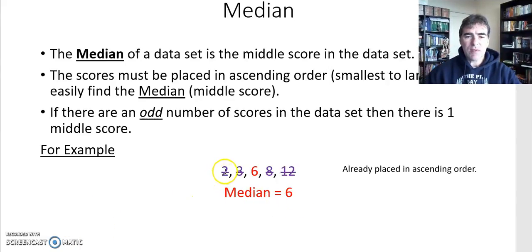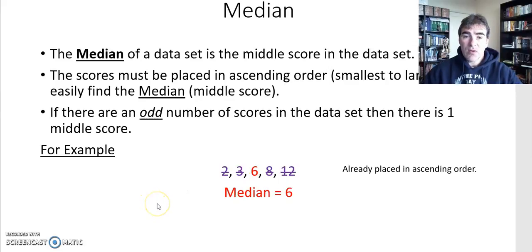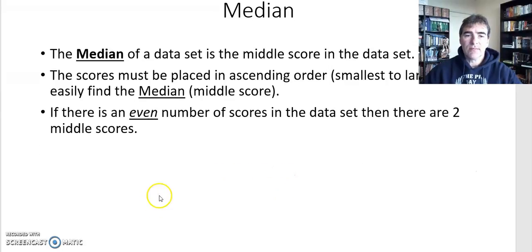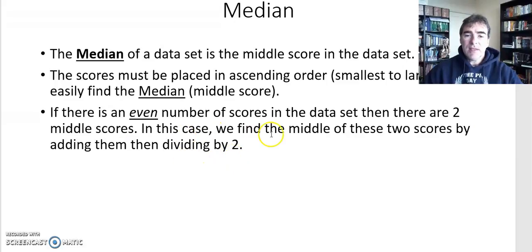So when there's an odd number of scores — 1, 2, 3, 4, 5 — there will always be one middle score which is one of the scores in your data set. What happens if it's not an odd number of scores? Well, if there's an even number of scores then we'll find there are two scores left in the middle. In that situation we find the middle of these two scores: we add them together to find the total, then divide by two.